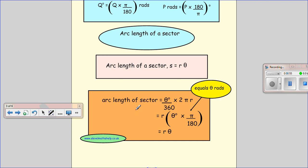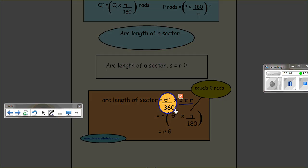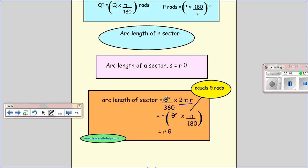The arc length of a sector: if we take the whole circumference of a circle, we get 2 pi r. Then the fraction of the circle we're looking at will be the angle of our sector divided by 360 degrees. We factorise out our r, we end up with the angle in degrees times pi over 180, which is just the conversion into radians. So we end up with the arc length of a sector equals the radius times the angle in radians.